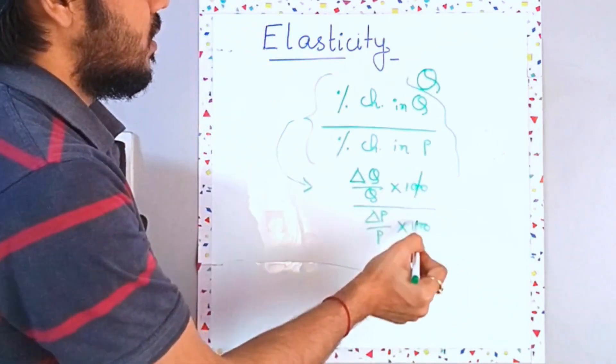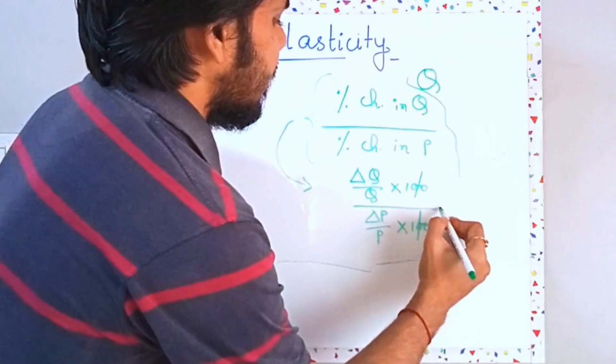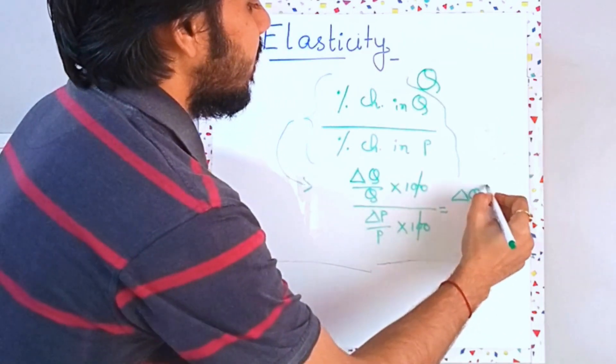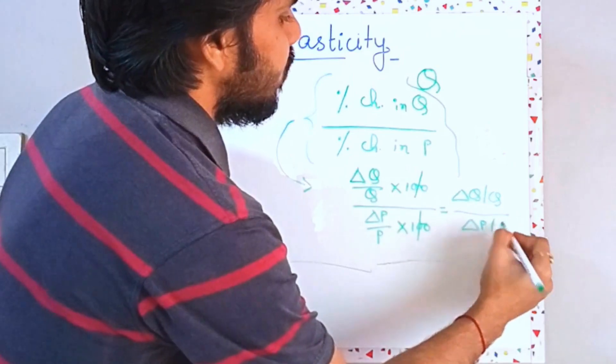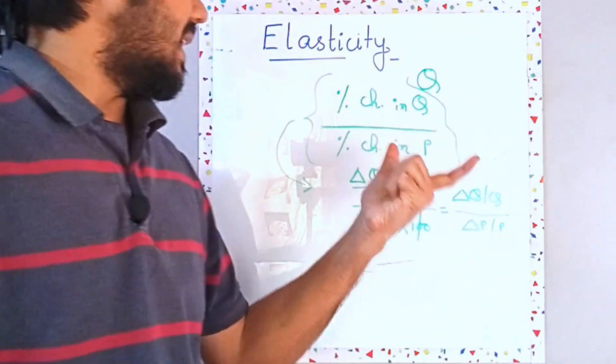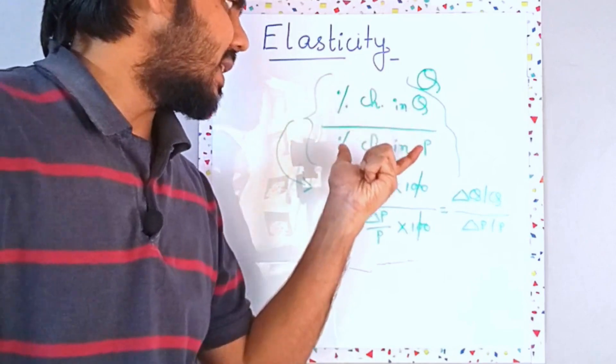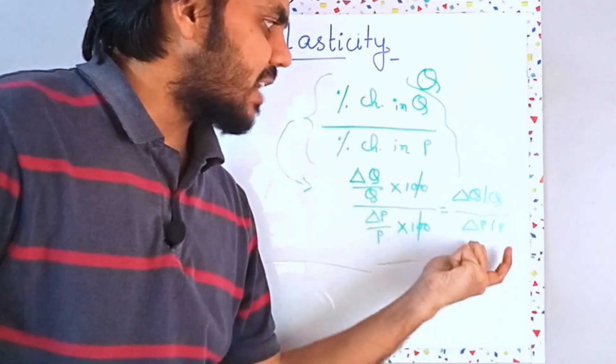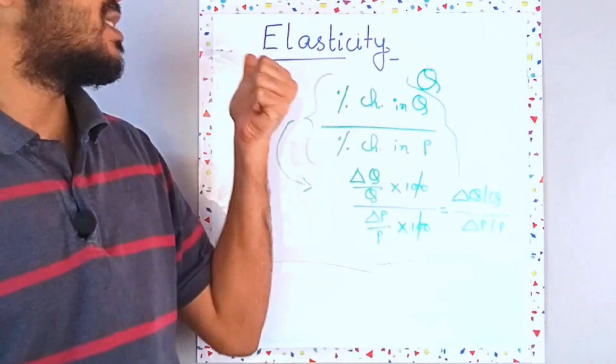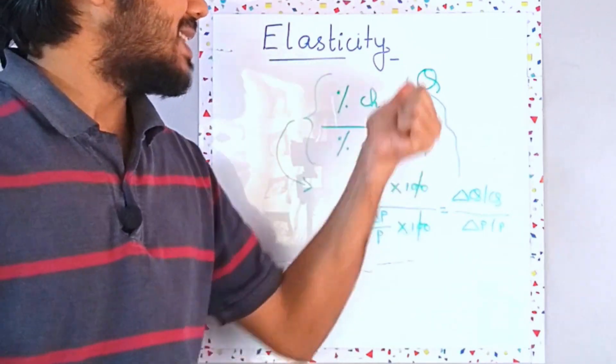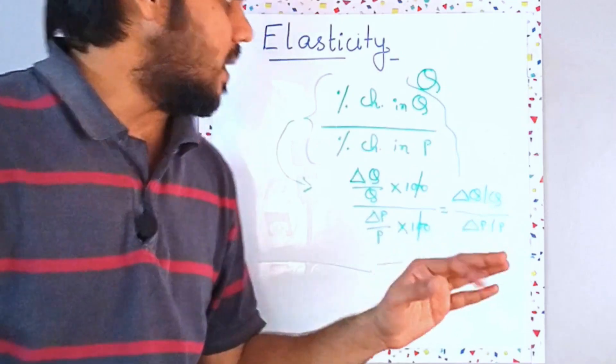Now you can simply cancel out these guys and you will be left out with delta Q by Q upon delta P by P. So simply you can say rather than just percentage change, even the fractional change ratio has the same meaning which is the elasticity or price elasticity of demand in this particular case.